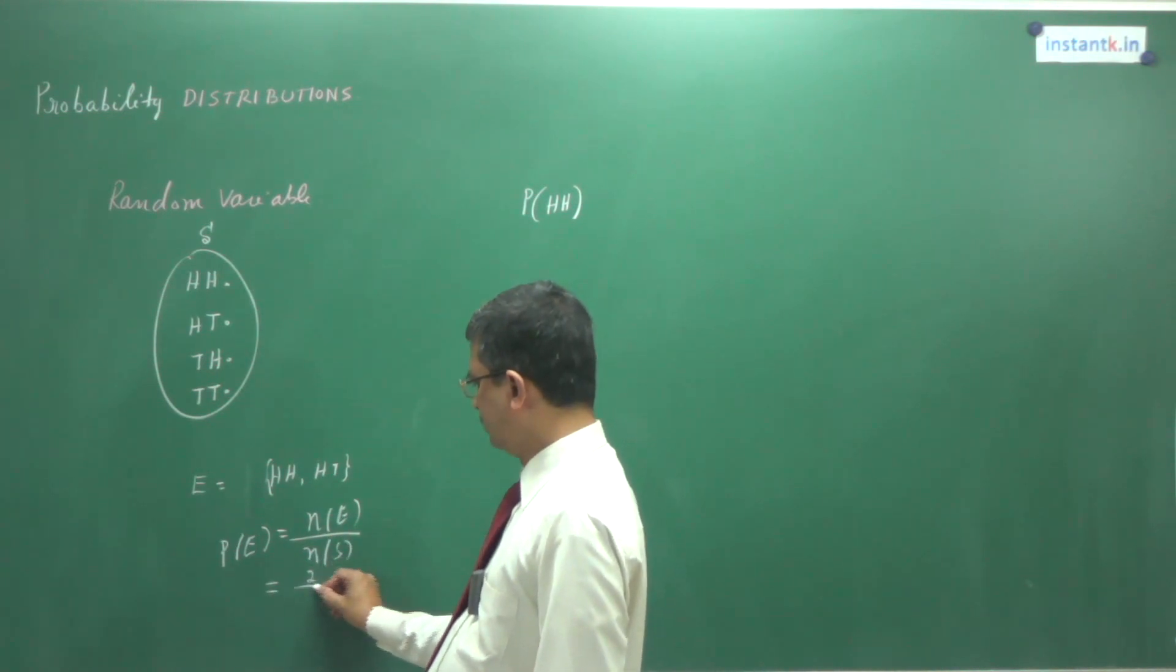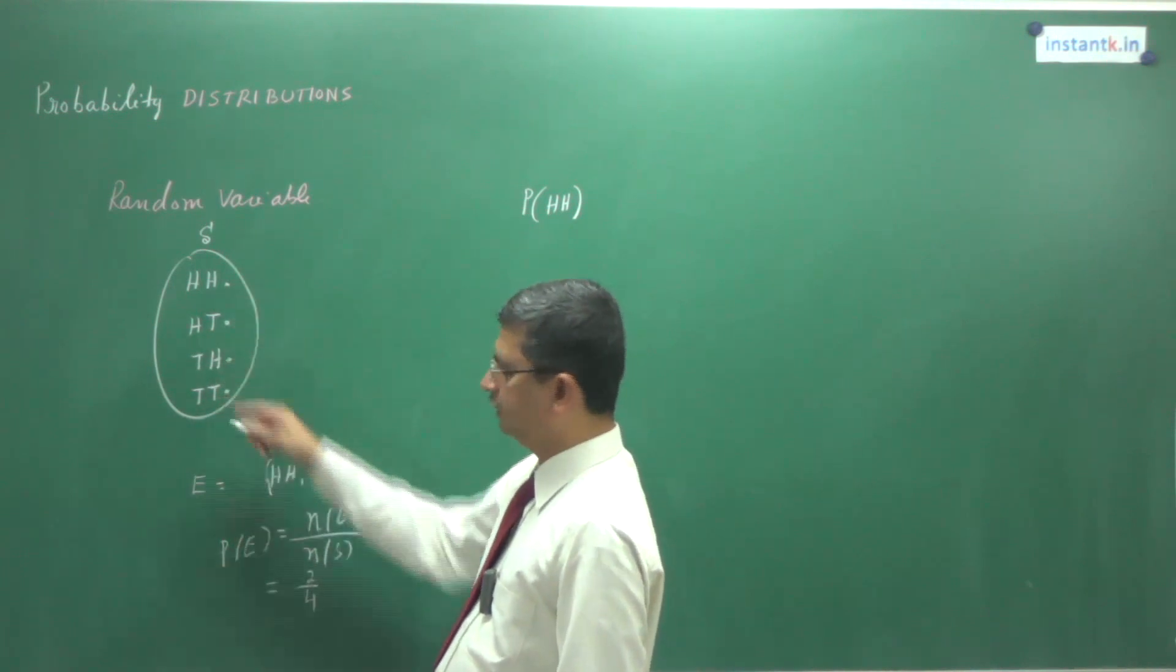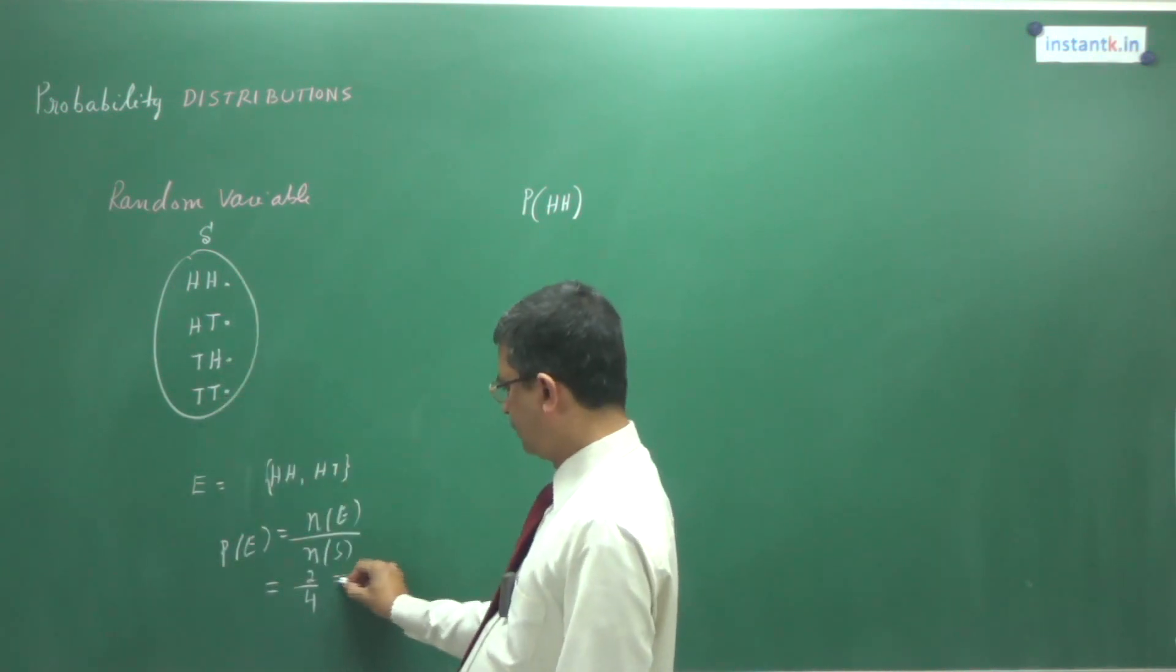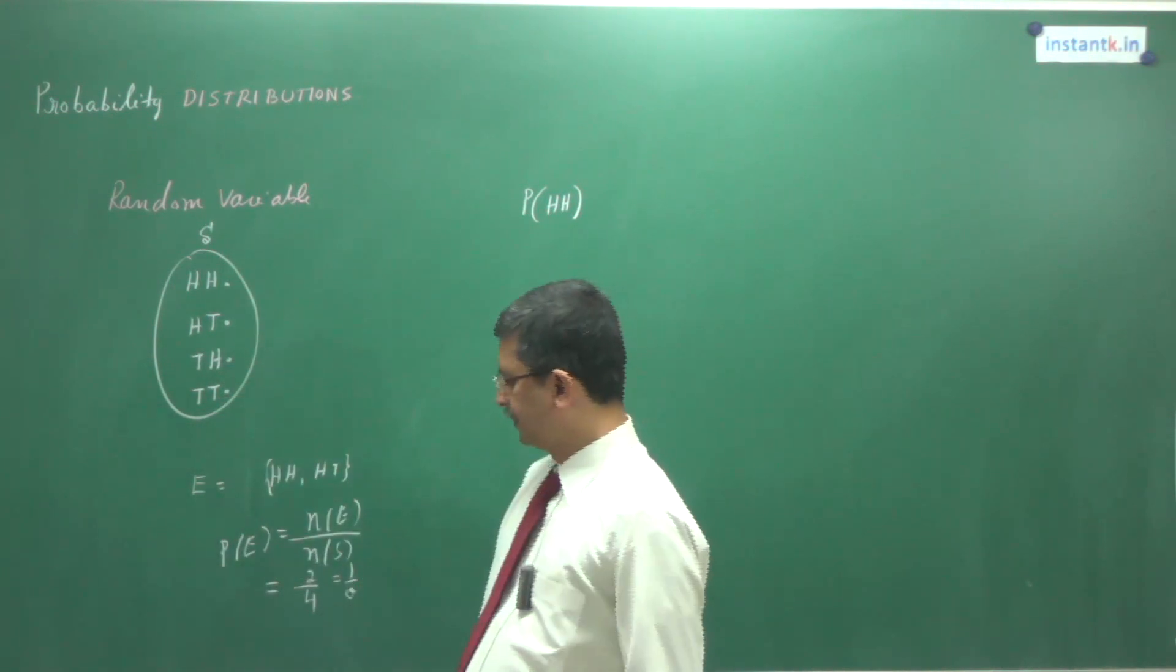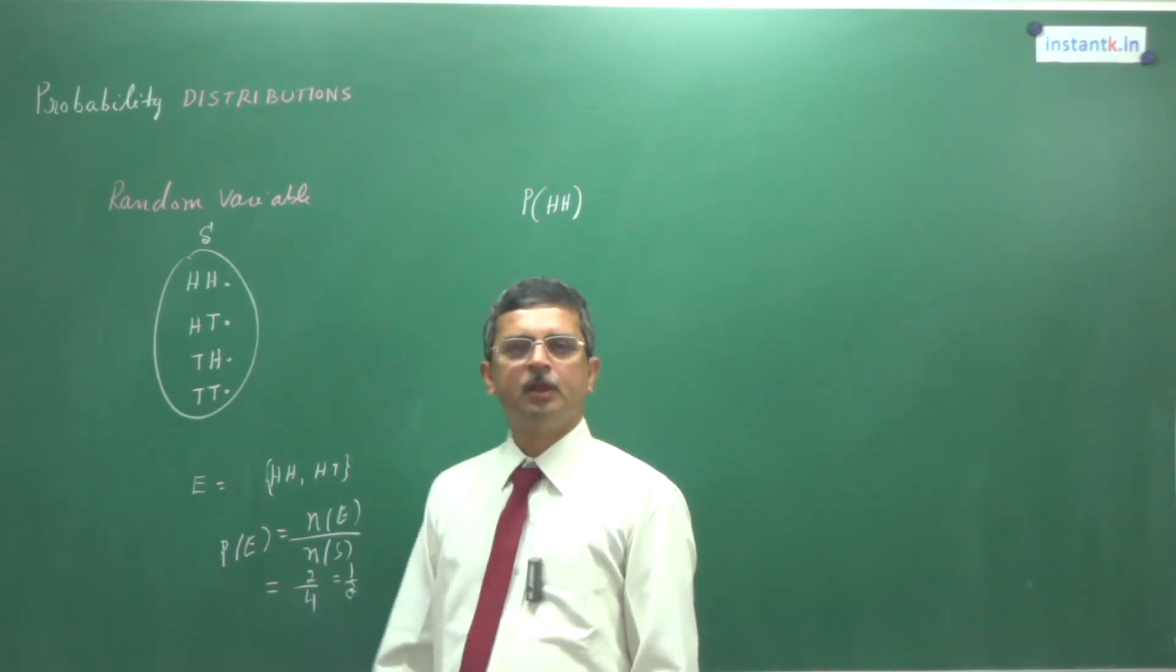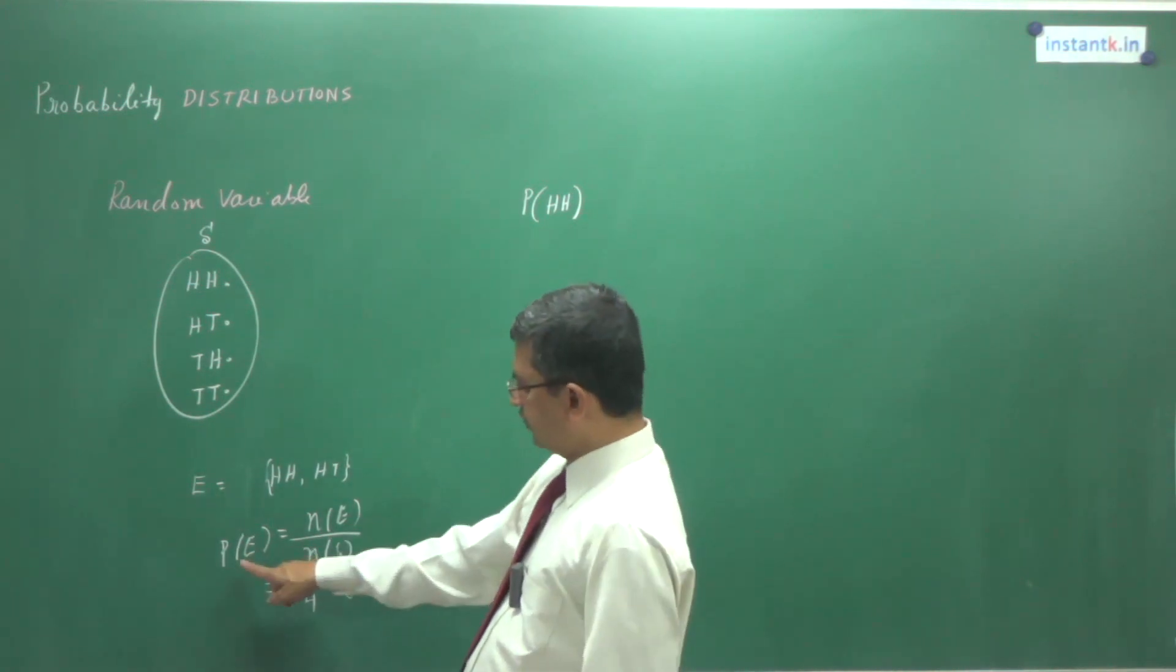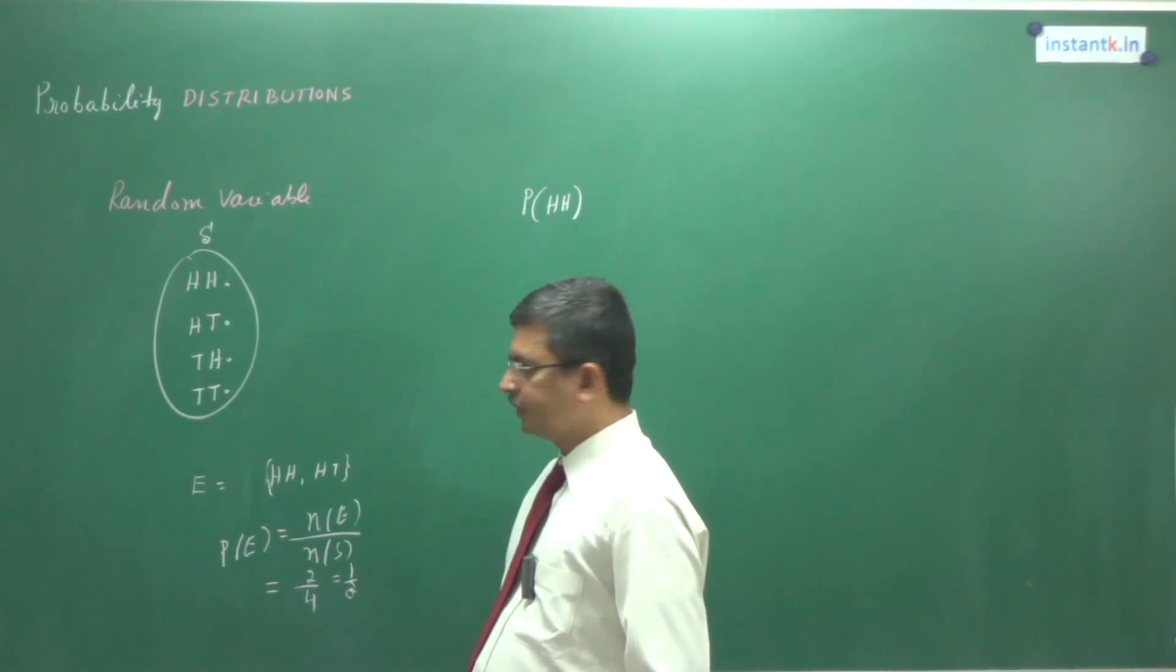So this is 2 by 4, number of elements. So we get that is half. We say the probability of E is half.